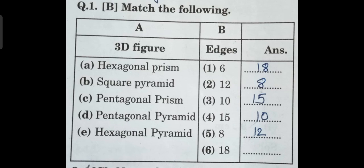Next match the following on 3D figures and their edges: hexagonal prism has 18 edges. Square pyramid has 8 edges. Pentagonal prism has 15 edges. Pentagonal pyramid has 10 edges. Hexagonal pyramid has 12 edges.